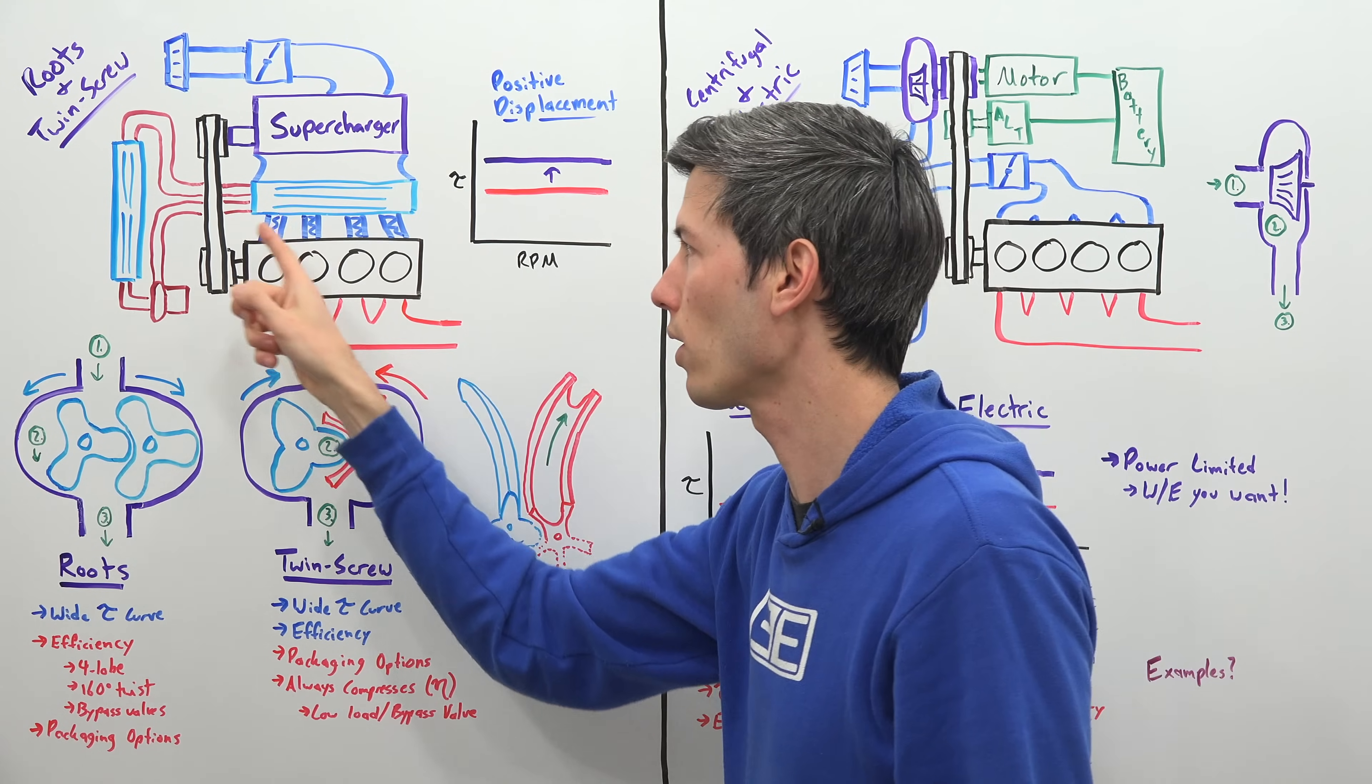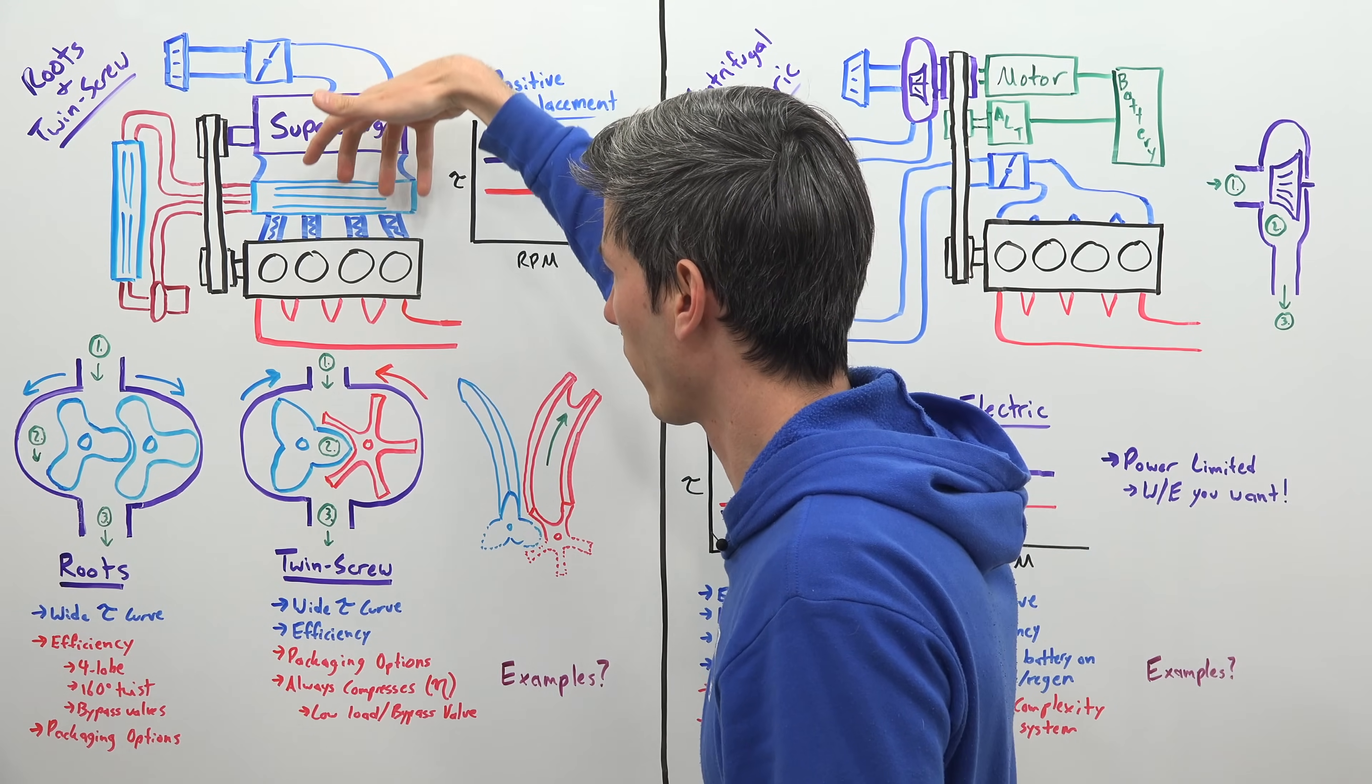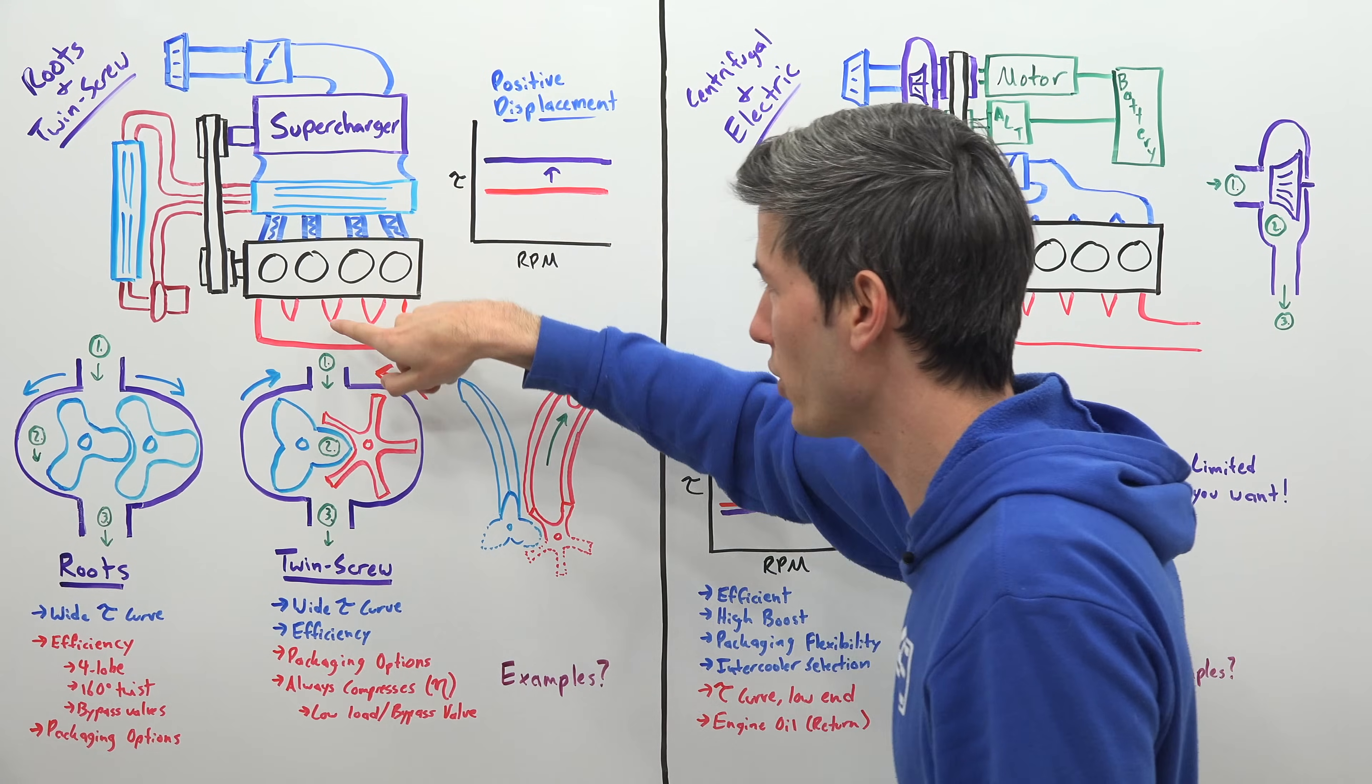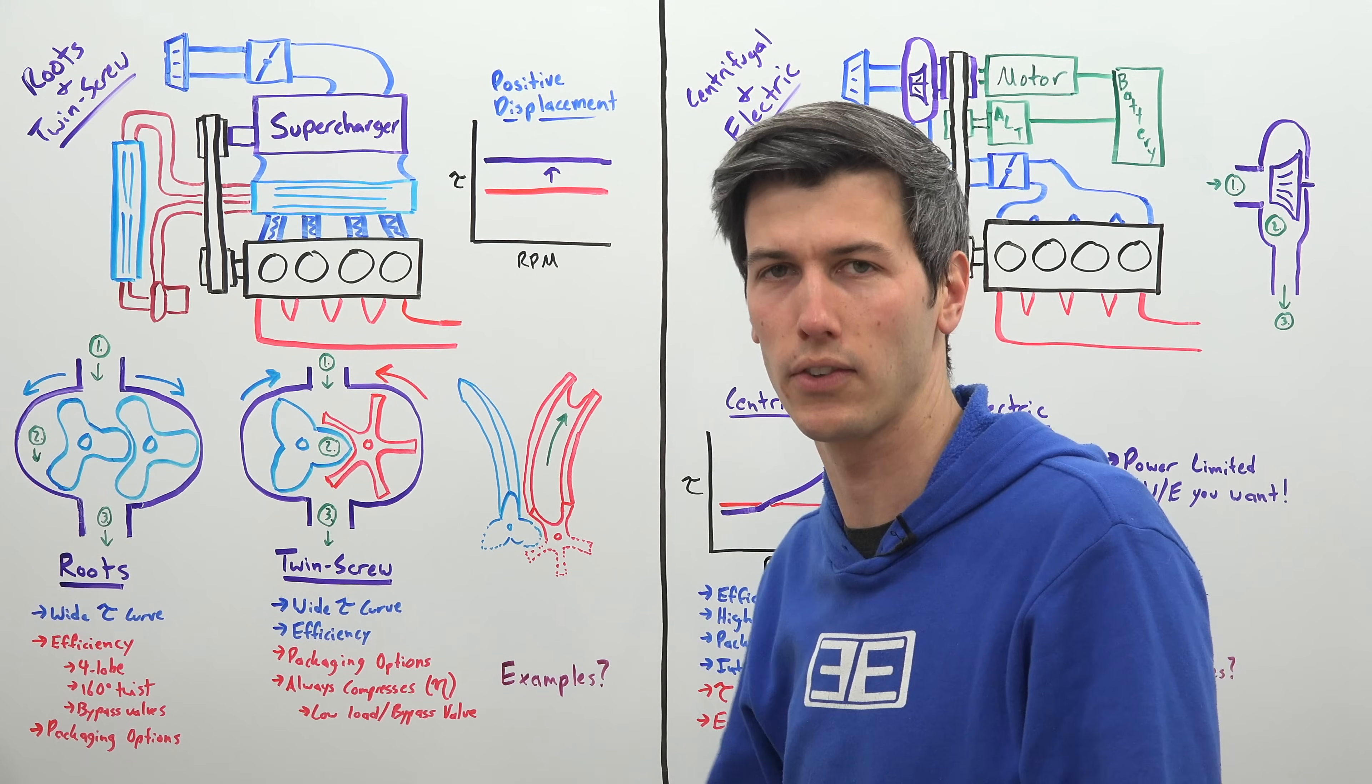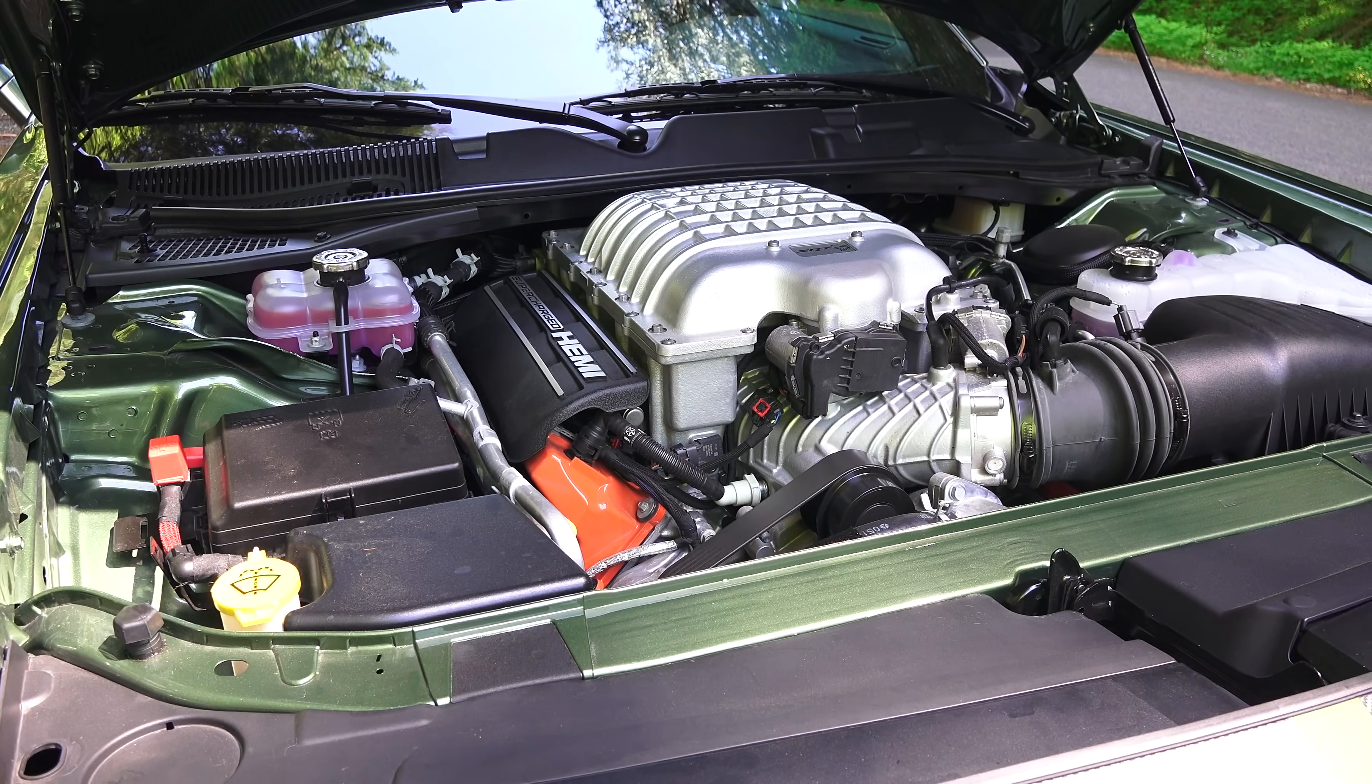in this case an air to water intercooler. So you've got a radiator up front that's circulating coolant to this intercooler. The air is passing through, travels into the engine, and then out the exhaust. So the overall layout of these two styles of supercharger is basically the same.